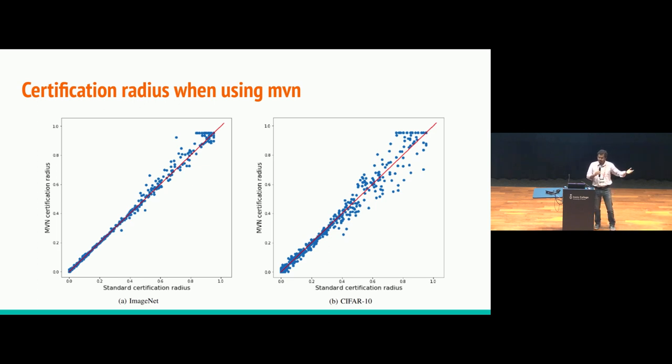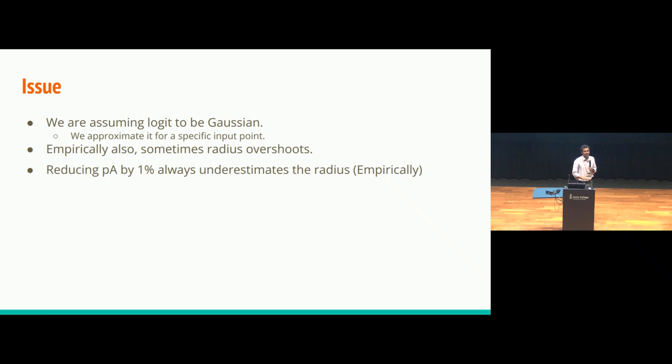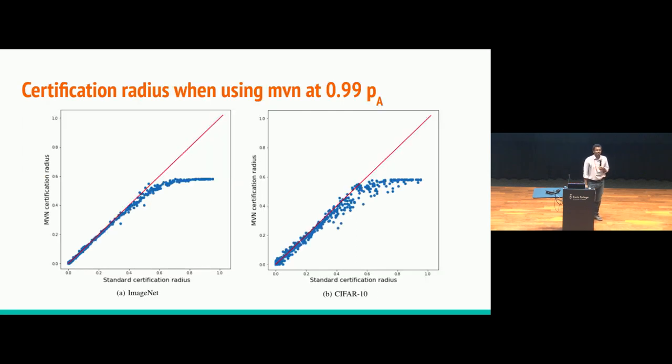And when we first saw this, we were like, wow, this is great. When two prompts are very similar, it was all over the place. And here, there is almost a linear relationship. But unfortunately, for all the points which are above this red line, our estimate is actually higher than the actual certification radius. And we are saying that this is a certificate, so that's bad. We need to somehow bring it down. And we tried to approximate the error in the multivariate normal, like that would be the ideal way to go. But unfortunately, at this high dimension, it was very difficult for us to do it. So instead, we simply resorted to reducing the PA, whatever is the top class probability, by 1%. And when we do that, we get something like this. Now, almost, we are getting almost similar to the actual radius, and it almost never overshoots the actual radius.